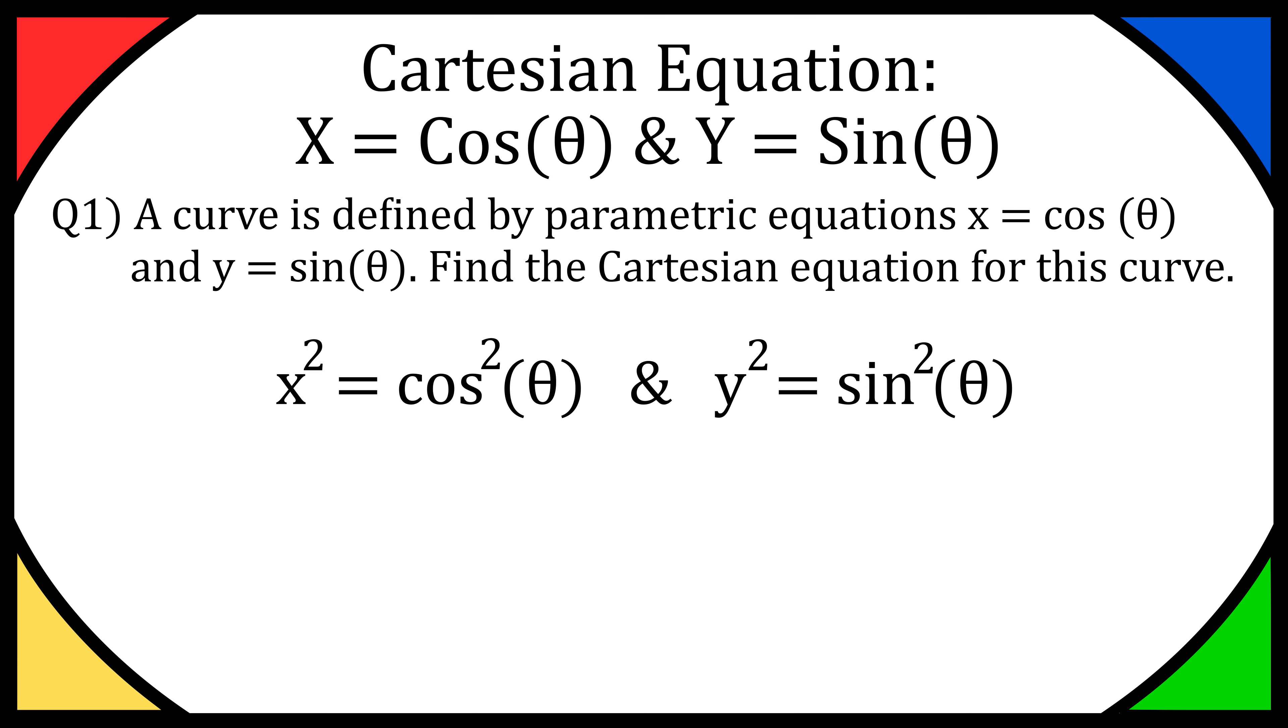So first thing you want to do is square x equals cos of theta and square y equals sine of theta. That's going to give us x squared equals cos of theta squared and y squared equals sine of theta squared.